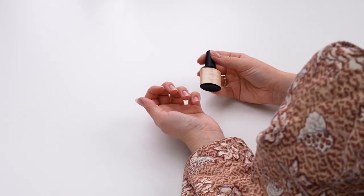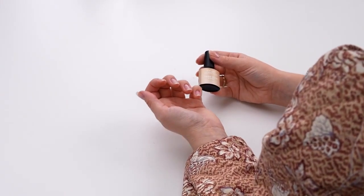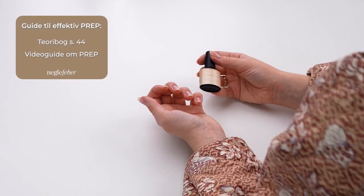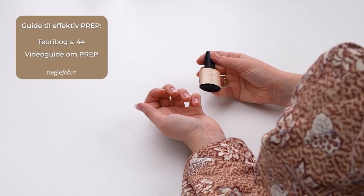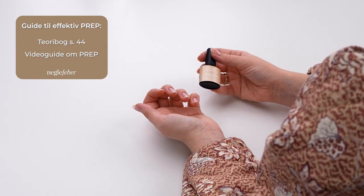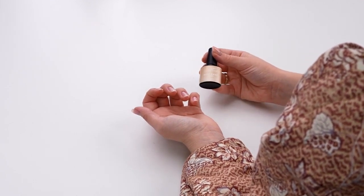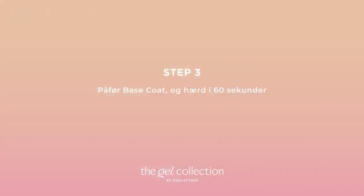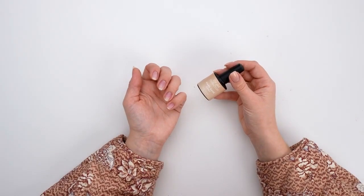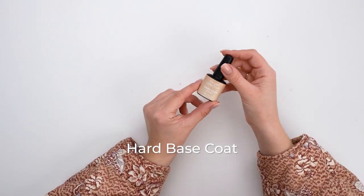The next thing you've got to do is perform an efficient prep. I've already done a prep. You can see how to make an efficient prep by going to the video guide on prep or look it up in our theory book. After prep, we just need to use base coat.